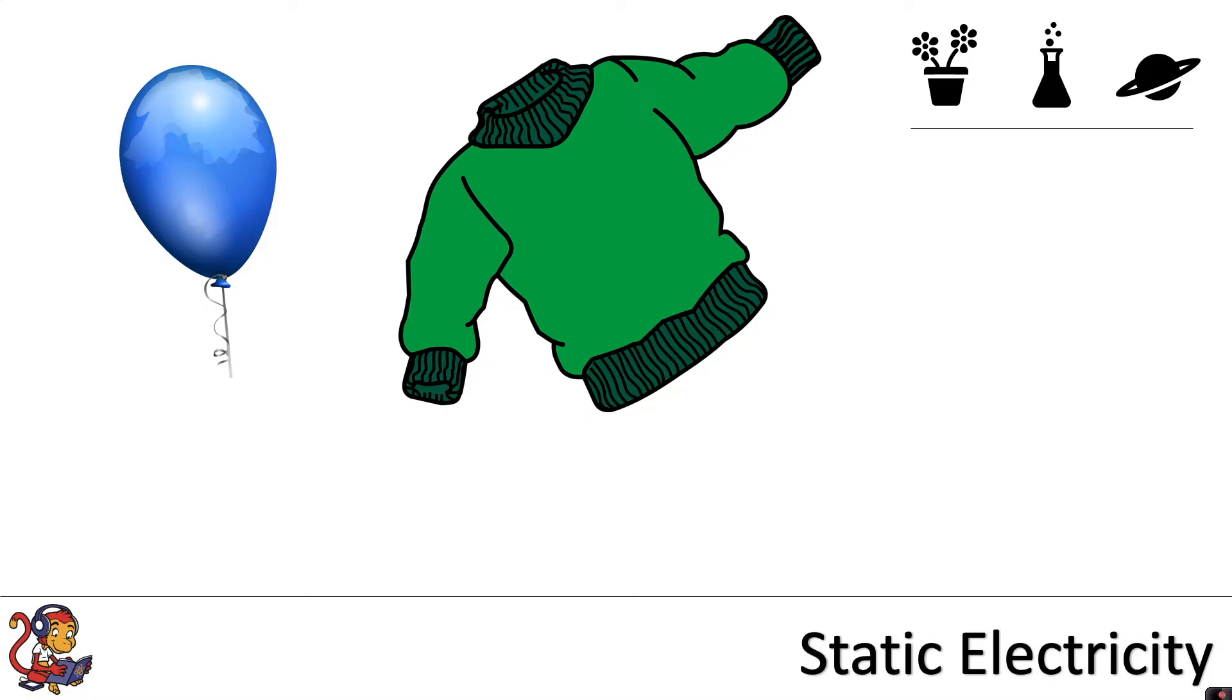As I said previously, everything is made up of atoms, so if we were to look inside this jumper we would perhaps see a number of different atoms. For example, we could see the carbon atom.